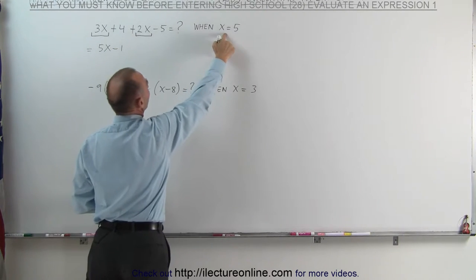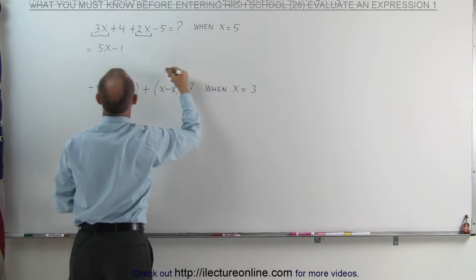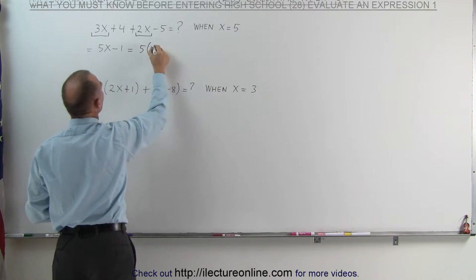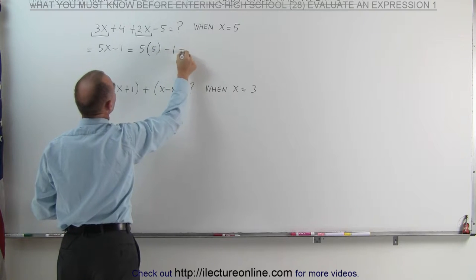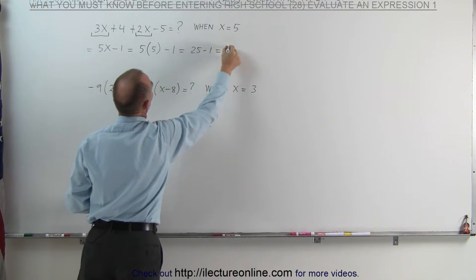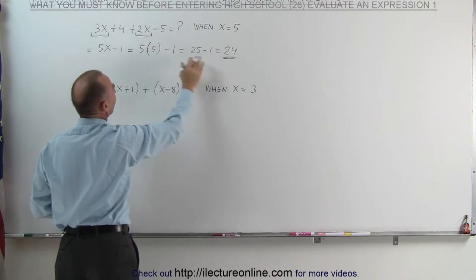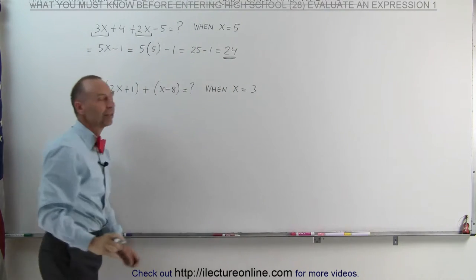Now we can go ahead and substitute for x, set it equal to 5. This is then equal to 5 times, instead of x, we write the number 5 minus 1, which is 25 minus 1, which is 24. So that's the expression evaluated when x takes on the value 5.